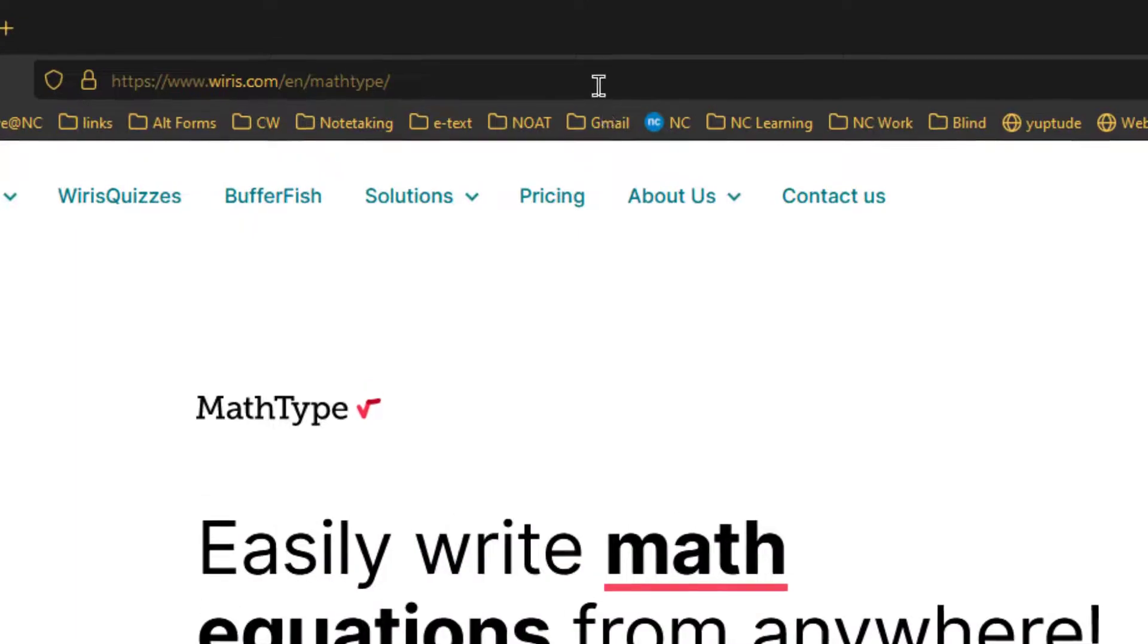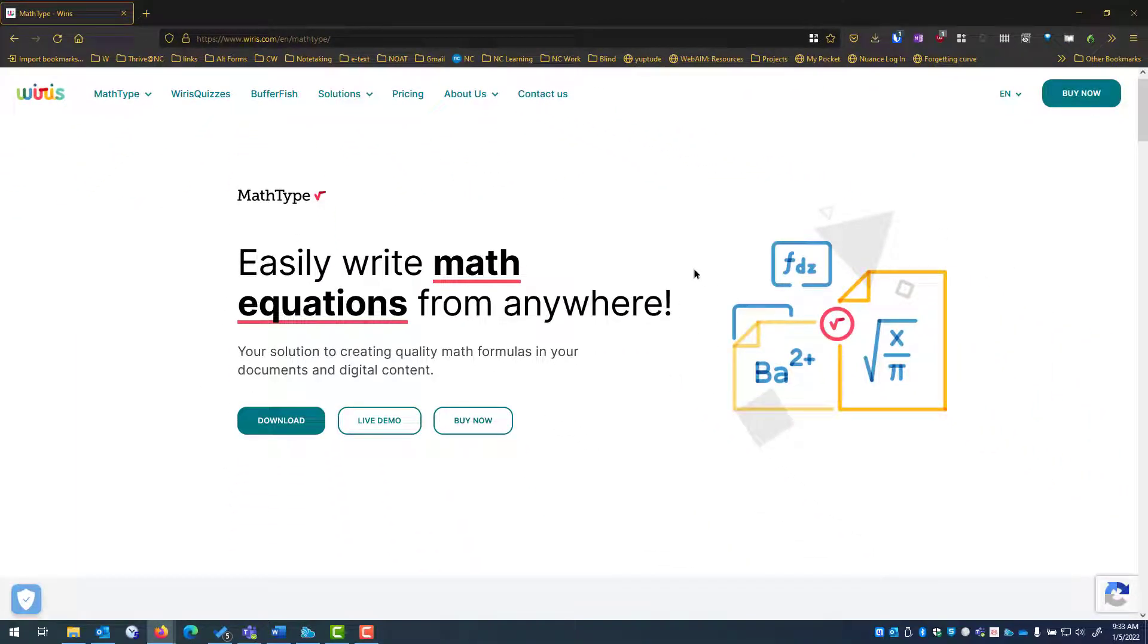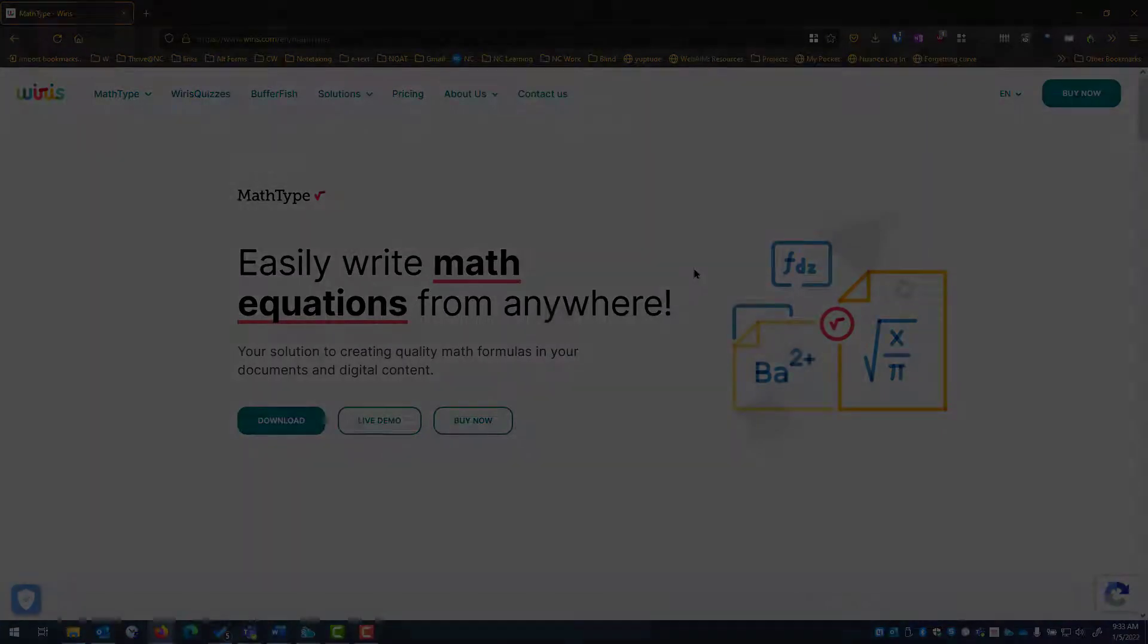There is a program called MathType. With MathType, if it's installed into Microsoft Word, it allows students to use the screen readers and have the math read to them appropriately. If you are part of a post-secondary institution, you can contact your accessibility or AODA department, and I'm sure they'll be able to point you in the right direction.